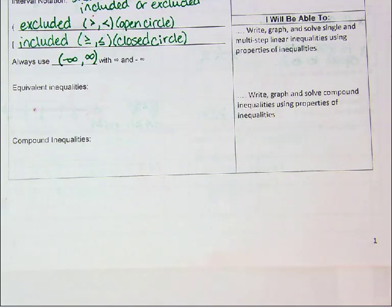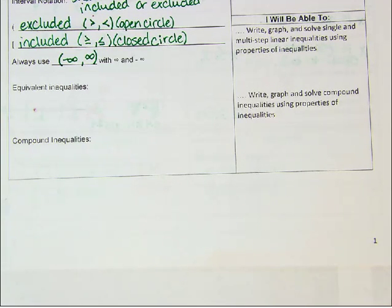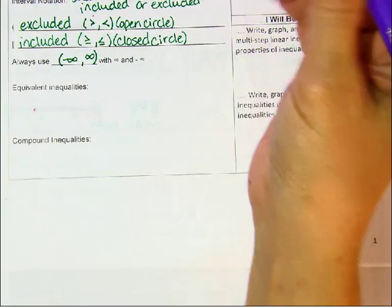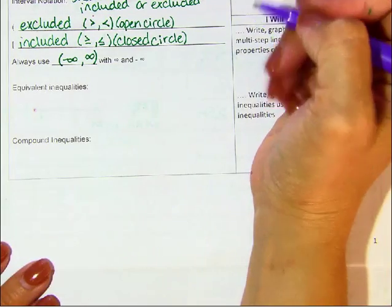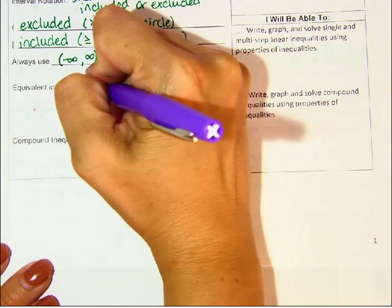These are the notes for 2.4. We need to first finish filling out the vocab on the front. Equivalent inequalities are inequalities that have the same solution.